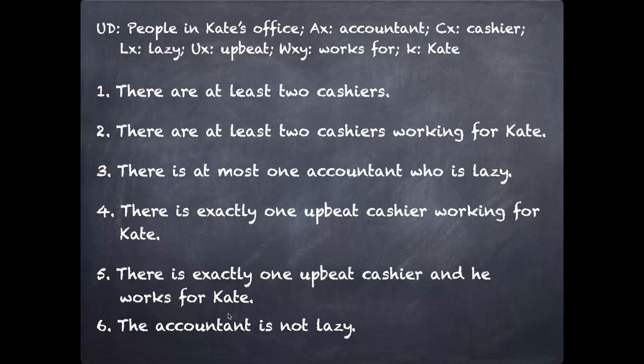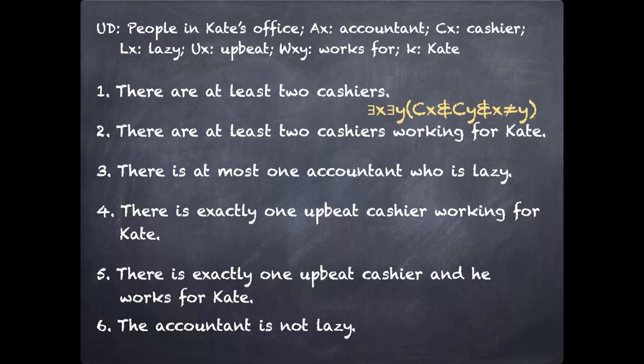Here are several example sentences involving expressions of quantity or definite descriptions. Pause the video and try to work out translations for all six using the symbolization key at the top. First: 'there are at least two cashiers.' We use the expression for 'at least two,' with cashier as our only predicate, following straightforwardly from the definition on page 151.